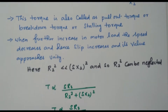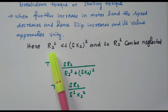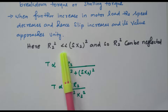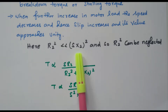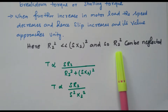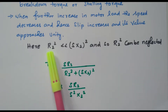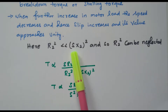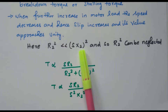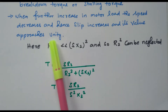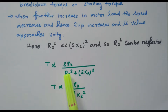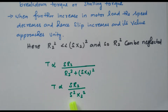Now we will analyze what happens when slip equals 1. R2² is very small compared to S²X2². So we can neglect the R2² resistance value. In the previous case we neglected the reactance value; now we neglect the resistance value because S is approaching 1, making S²X2² much larger. The normal torque equation S·R2 / (R2² + S²X2²) becomes, after neglecting R2²: S·R2 / (S²·X2²).